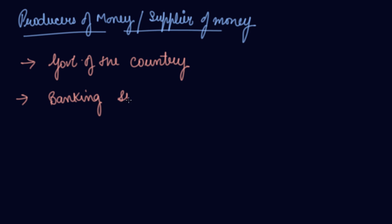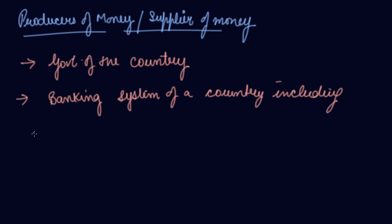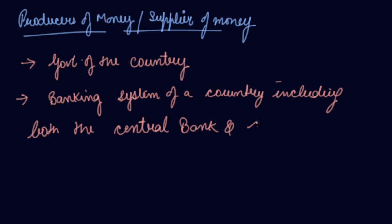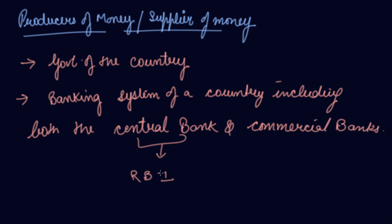The central bank and commercial banks are the people who supply money in the market. The banking system includes both the central bank and the commercial banks. Your central bank is the RBI — Reserve Bank of India — and your commercial banks include various banks like ICICI Bank, Axis Bank, HDFC Bank, Punjab National Bank, and State Bank of India. These are your commercial banks, and the apex or head bank is the central bank, which is the RBI.